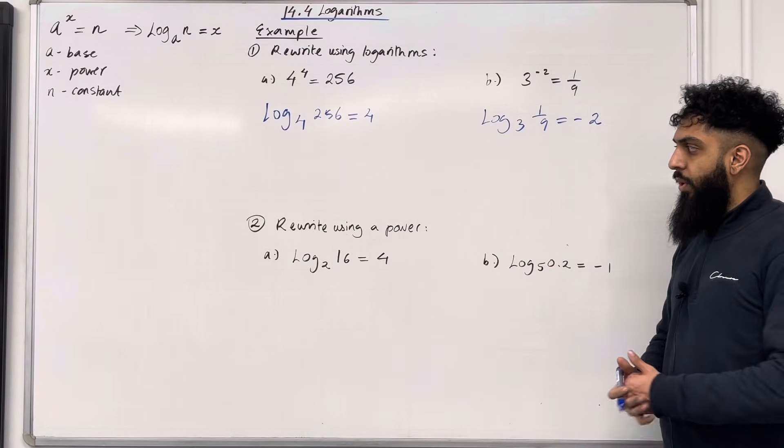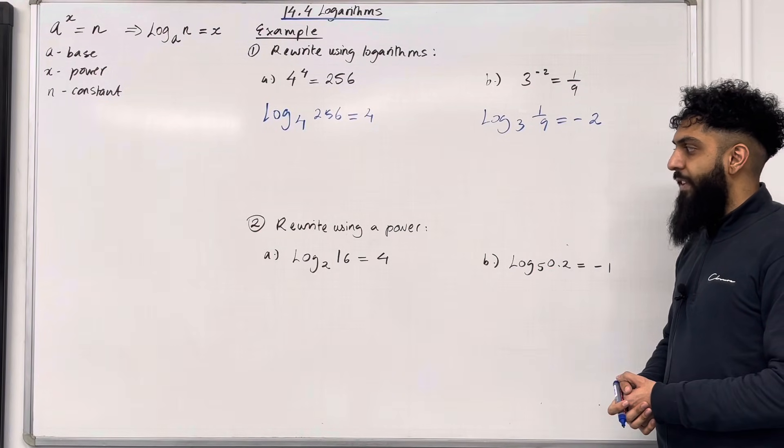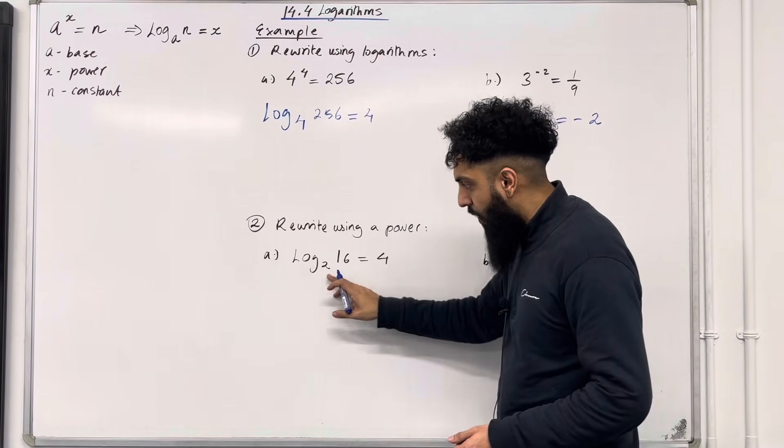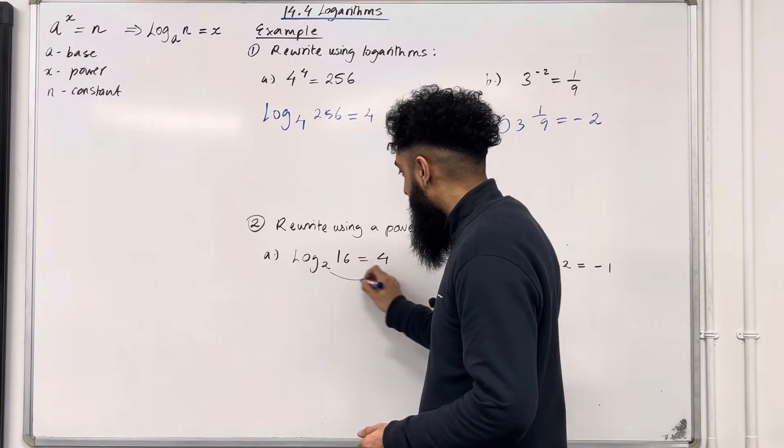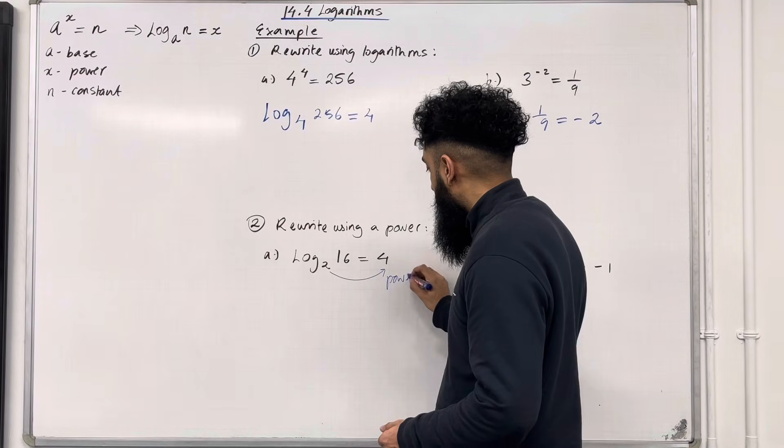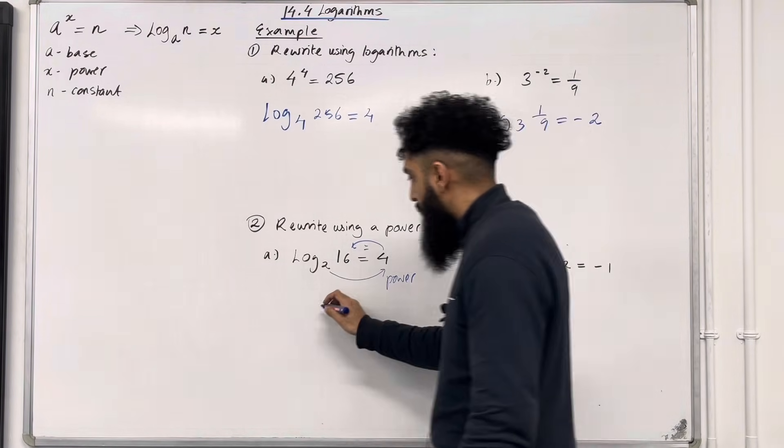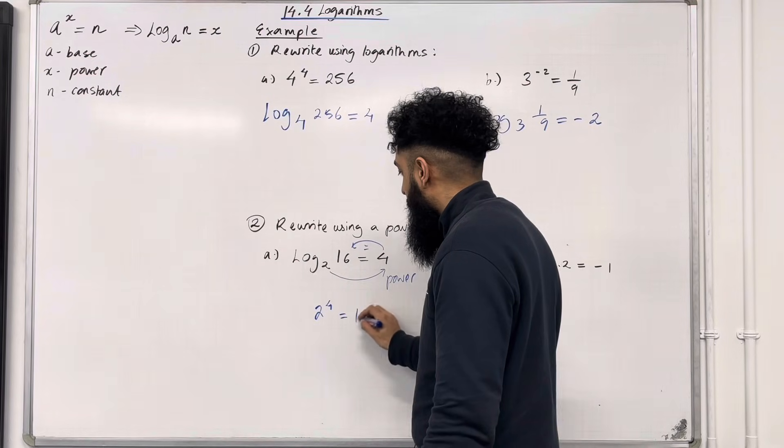Question number 2. Rewrite using a power. Part A, log base 2 of 16 equals 4. So this is the base of the logarithm. So we take the base and we raise it to the power 4. And we set it equal to what we have inside the logarithm. So we have 2 to the power 4 equals 16.